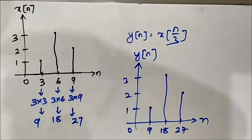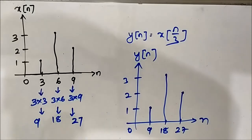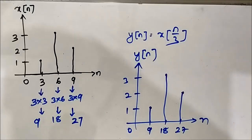So this is the shortcut method for time scaling of discrete time signals. To summarize: when something is multiplied with the time variable inside the bracket, the time instances get divided by that factor in the output; when something divides the time variable inside the bracket, the time instances get multiplied. I hope you liked this video — please subscribe to Engineering Tutorial for more such videos. Have a great day, thank you.